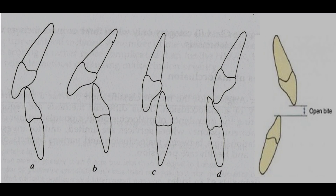Proclination is when the upper and lower incisors are proclined labially to a greater degree than normal. Retroclined is when the upper and lower incisors are inclined palatally or lingually to a greater extent than normal.